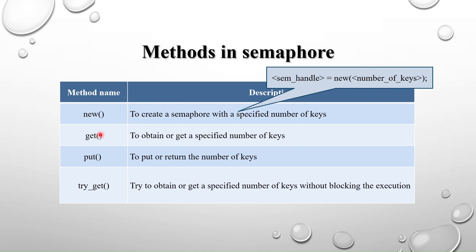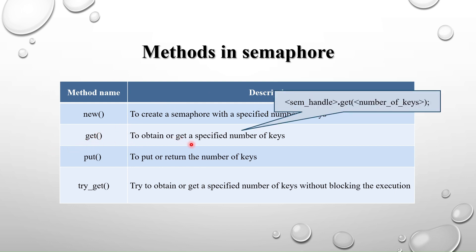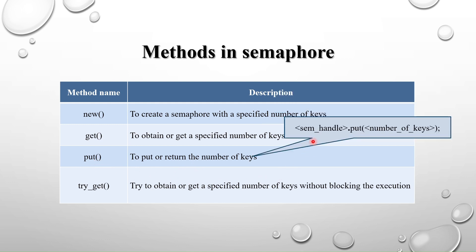The next method is `get`. To obtain a specified number of keys, we use the get method. The syntax is: `sem_handle.get(number_of_keys)`, where you specify how many keys are required to continue the operation. After performing the operation, the process must return the key using the `put` method. The syntax is: `sem_handle.put(keys)`, so other processes can then get the key.